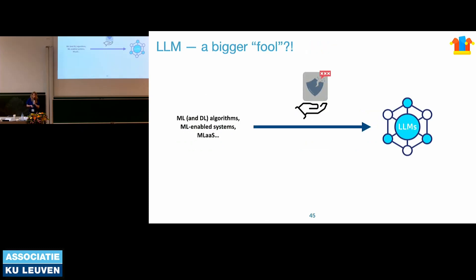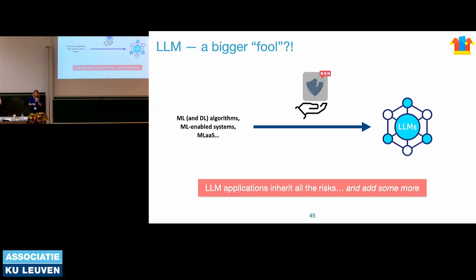Moving on to a more recent innovation — large language models. You might wonder: if this is more advanced technology, it's probably better and more secure. But if there is a second takeaway from here, large language models are in many ways an even bigger fool. They inherit all machine learning problems and limitations that I've discussed, and they add even more. That's why it is now such an urgent and open question for the community and the industry — who has already deployed these systems — what are the risks and how can we mitigate them.